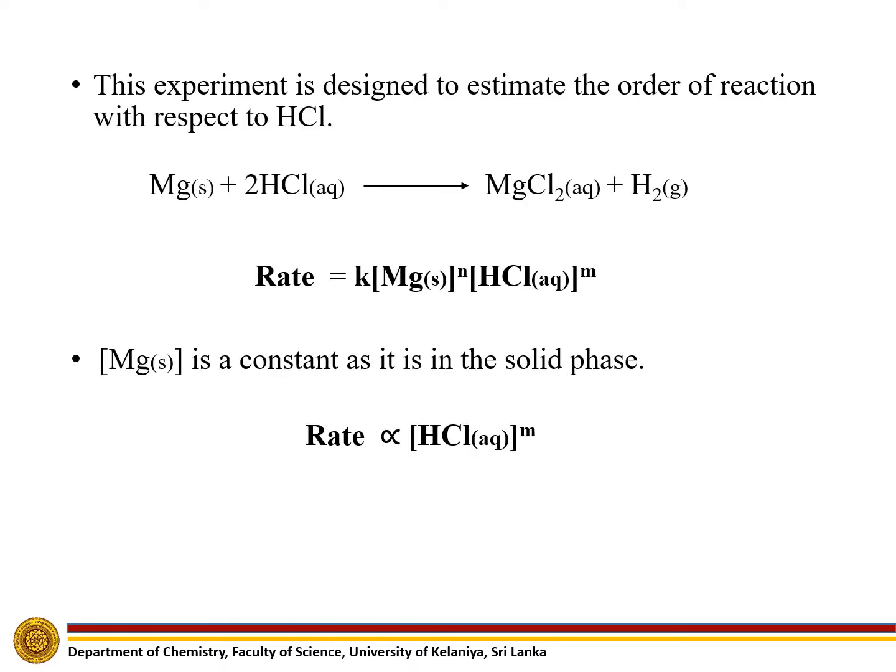This experiment is designed to estimate the order of reaction with respect to HCl. Here, magnesium reacts with HCl to form magnesium chloride and hydrogen gas. The rate equation for this reaction can be written as: Rate = k[Mg]^n[HCl]^m. Since magnesium is a constant as it is in the solid phase, the rate can be written as: Rate is directly proportional to [HCl]^m.